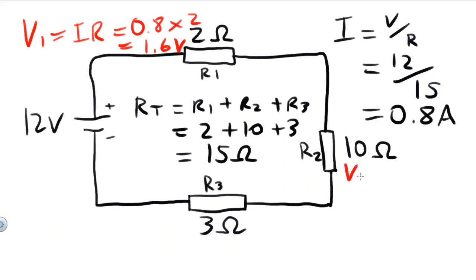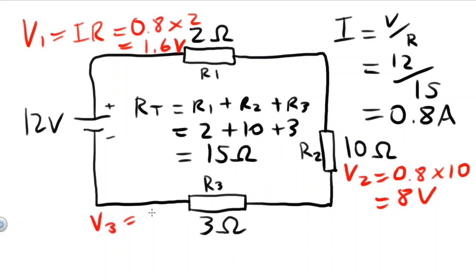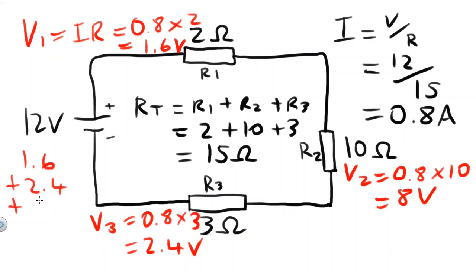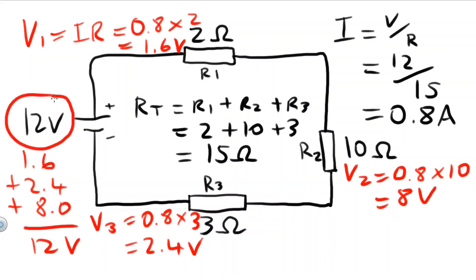For resistor 2, V2 will equal I times R, which is 0.8 times 10, which equals 8 volts. For resistor 3, V3 will equal I times R, 0.8 times 3, which will equal 2.4 volts. Now if we add up all of those voltage drops — 1.6 plus 2.4 plus 8.0 — we'll get 12 volts, which is exactly what we expect because our voltage for our circuit is 12 volts.